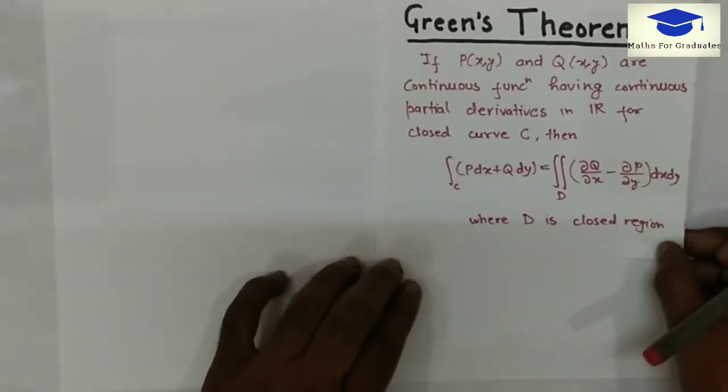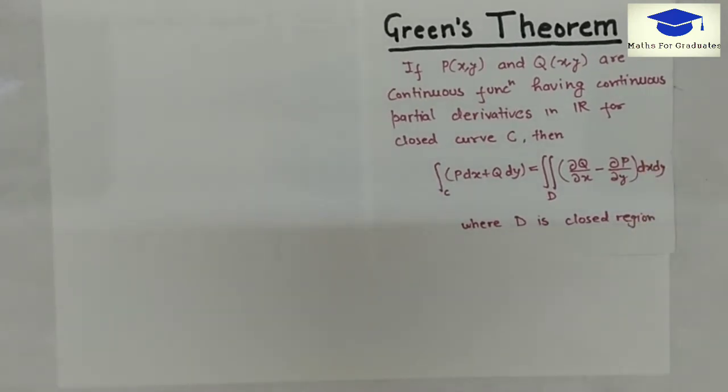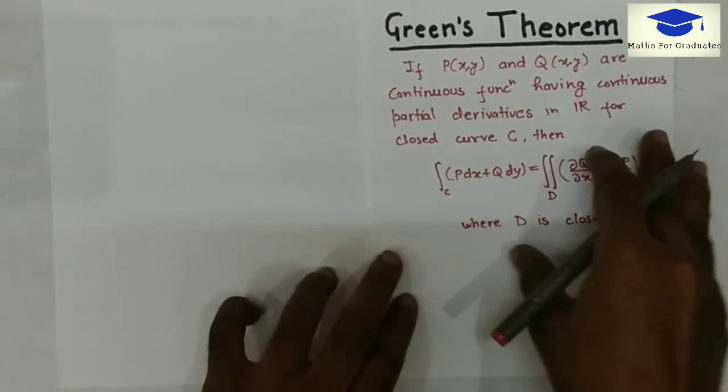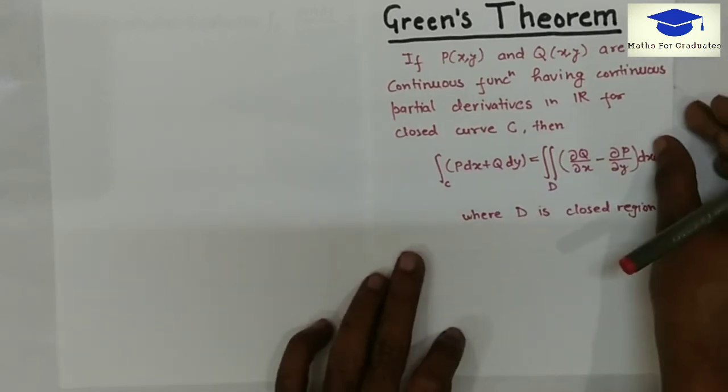Now, from Green's theorem, according to this theorem, if p of x,y and q of x,y are two functions that are continuous and having continuous partial derivatives, then integration of p dx plus q dy is given by double integration, del q over del x minus del p over del y dx dy.